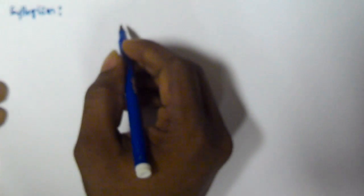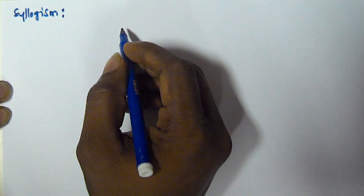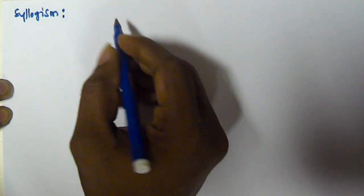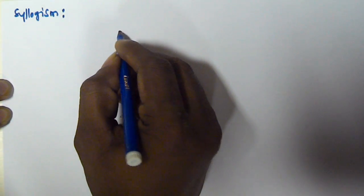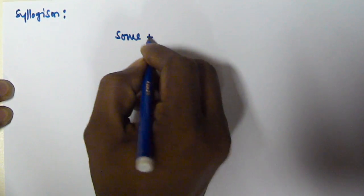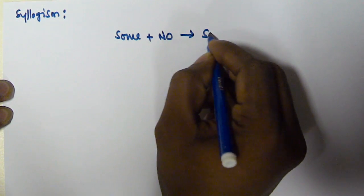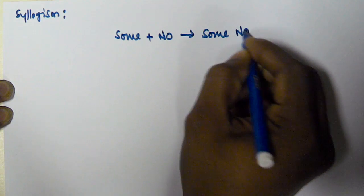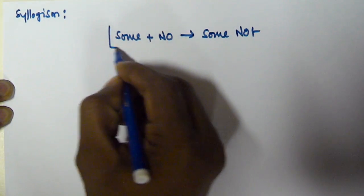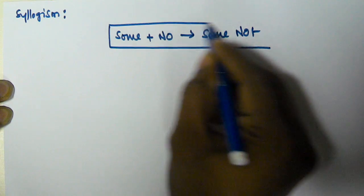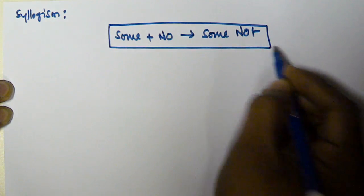Hello friends, in this video we will see another problem based on the 'sum plus no is equal to sum not' rule. In the previous video we have seen one example based on this rule, so in this video we will see another example.